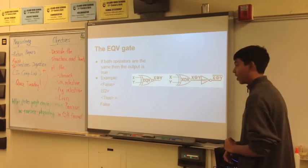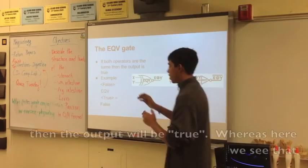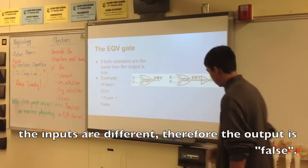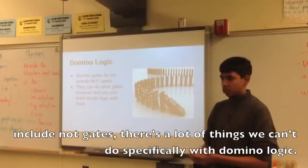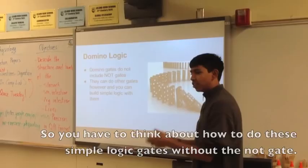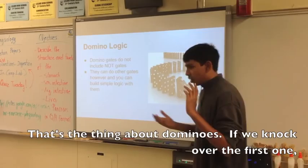The XOR gate: if both operators are different, then the output is true. So if one is false and one is true — if both of those operators are different — then the output is going to be true. The XNOR gate: if both operators are the same, such as false and false, or true and true, then the output will be true. If the inputs are different, the output is false.